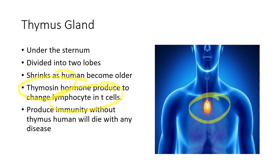The thymus gland plays a very important role. When we get older and the thymus shrinks, it is fine because by that time enough T-cells have already been produced during young age. In cancer — mainly HIV — the attack happens on the T-cells themselves.